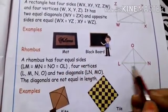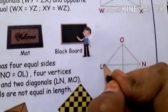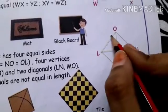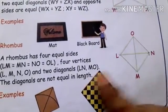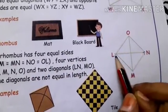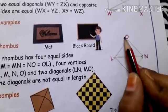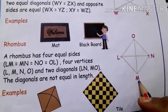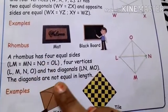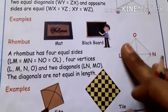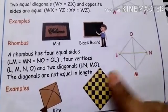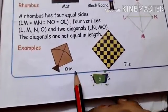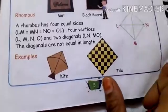A rhombus has four vertices: L, M, N, O. The diagonals are LN and OM — two diagonals. The diagonals of a rhombus are not equal in length. So rhombus has four equal sides and four vertices, but its diagonals are not equal. Examples: kite, tiles.